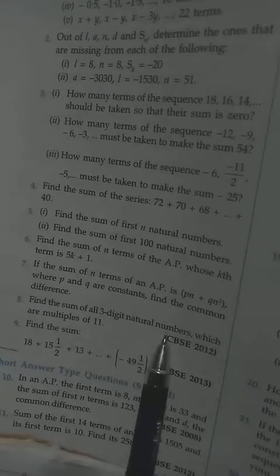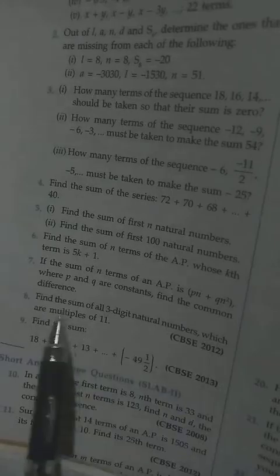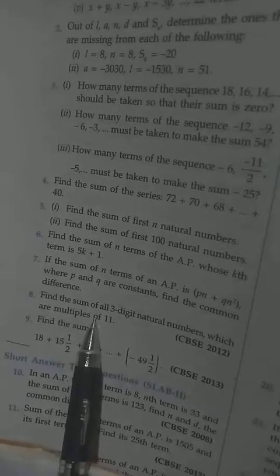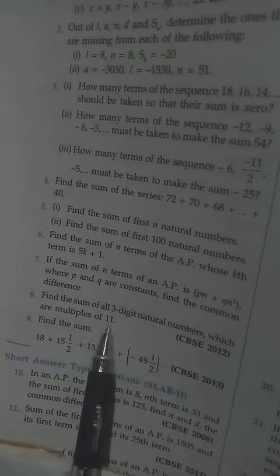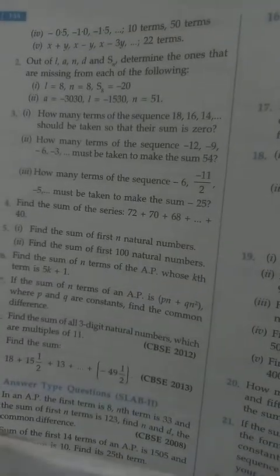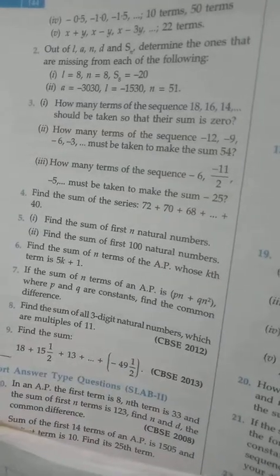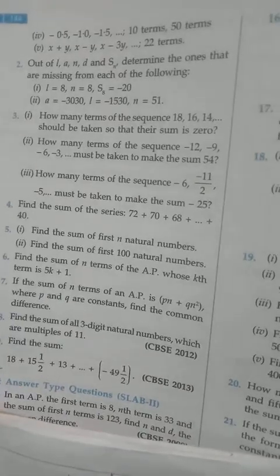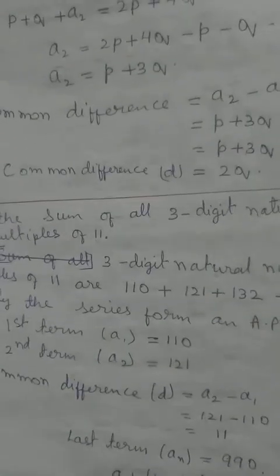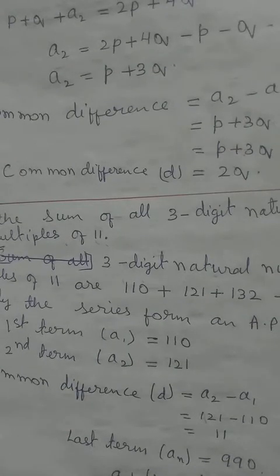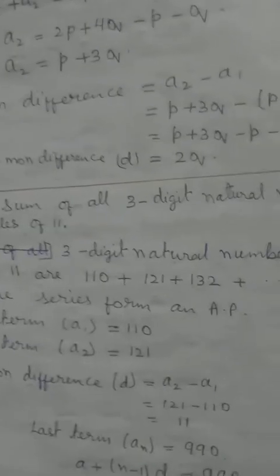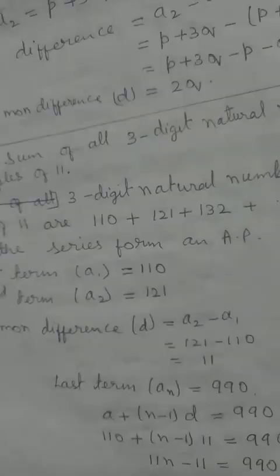Question 8: find the sum of all 3-digit numbers that are multiples of 11. Multiples of 11 are in the table of 11. The first 3-digit multiple: 11 × 10 = 110. The next: 11 × 11 = 121, then 11 × 12 = 132, and so on.